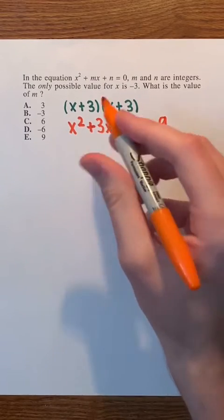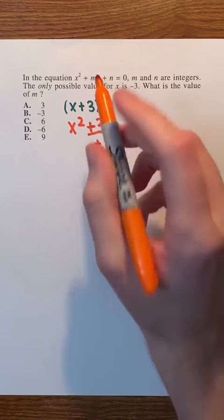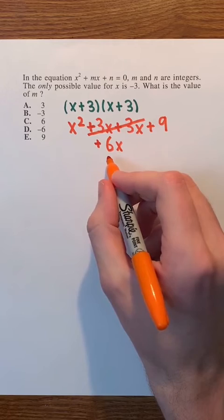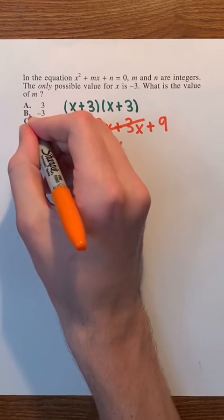Then, 3x plus 3x is just 6x. Because m is in front of the x term, we just have to look at the coefficient of our x term, and it's 6. So C, 6 is the correct answer.